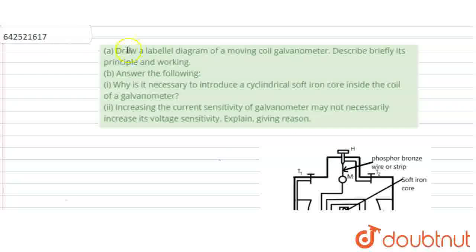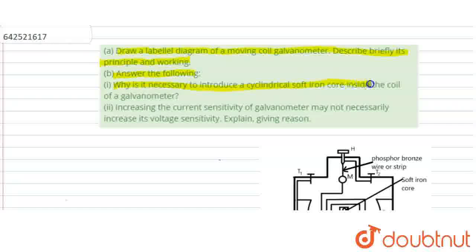Hello students. The question here is: Part A - Draw a labelled diagram of a moving coil galvanometer. Describe briefly the principle and working. Part B - Answer the following: First part, why is it necessary to introduce a cylindrical soft iron core inside the coil of a galvanometer? Second part, increasing the current sensitivity of a galvanometer may not necessarily increase its voltage sensitivity. Explain, giving reason.